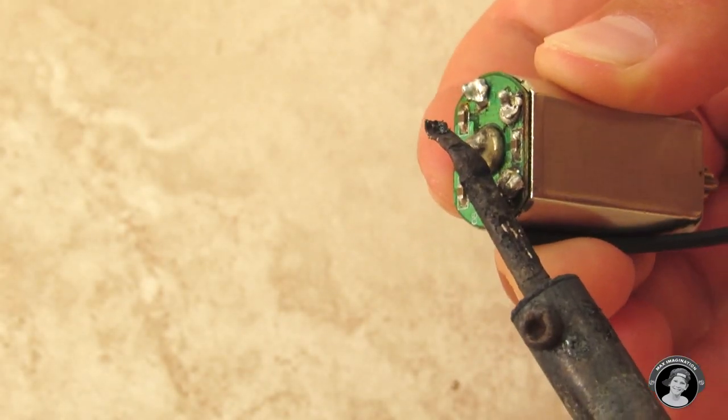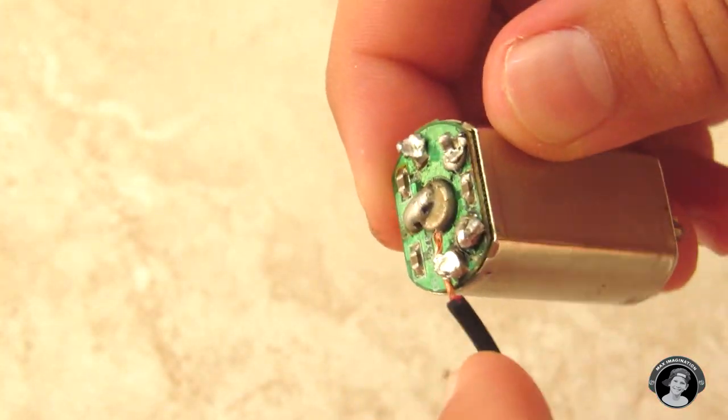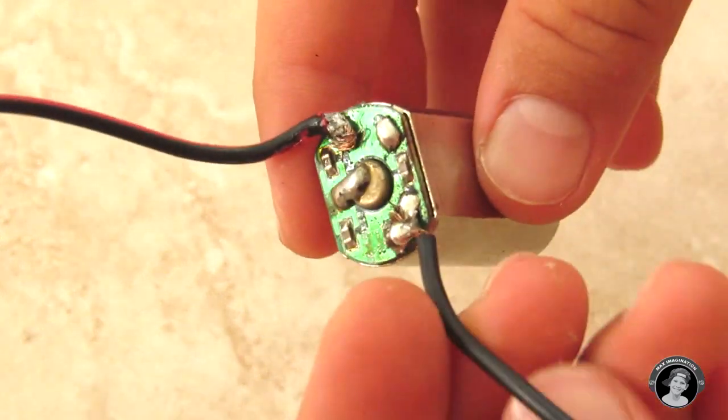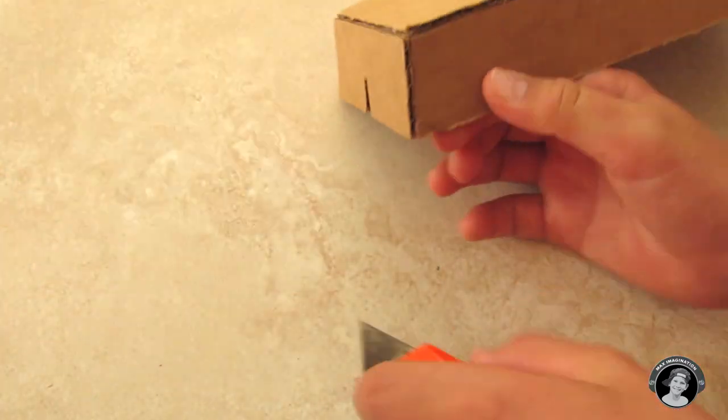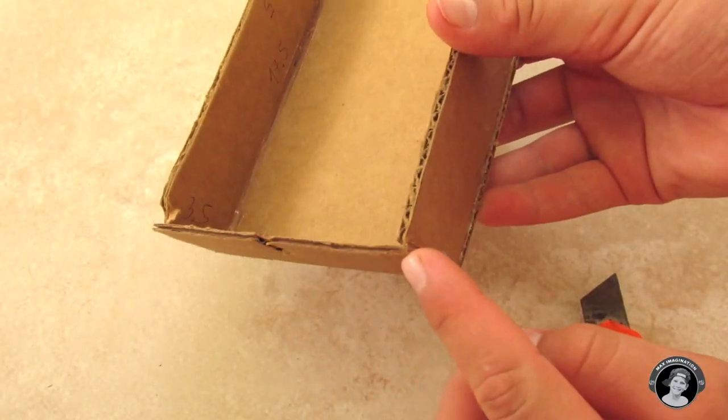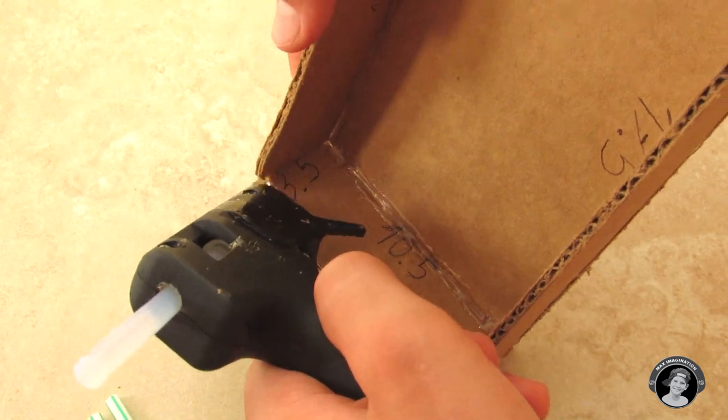Then we're going to solder some wires to the DC motor. First one will go on the negative and then the other one will go on the positive. Then you're going to make some little notches at the back of your tank for the straws to go through. Then you're going to glue the straws.